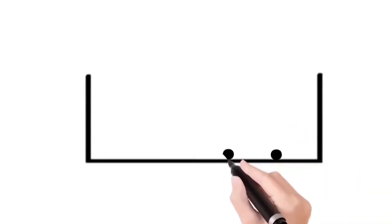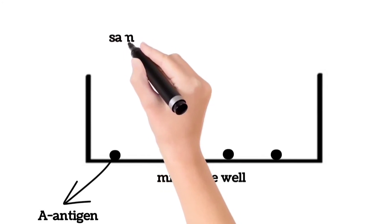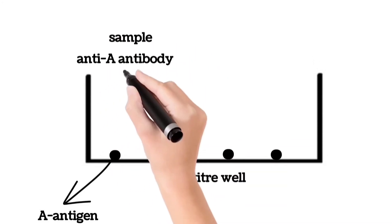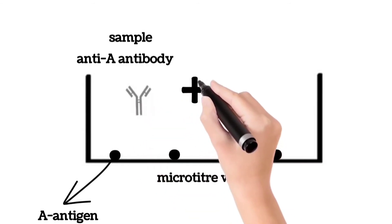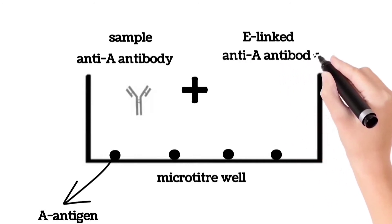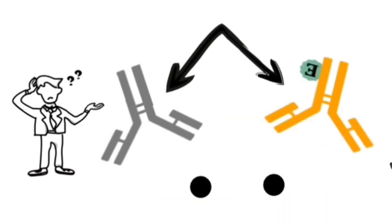In the first step, a microtiter well is coated with the A antigen, and this coating is mediated with the help of a coating buffer. After this, the sample containing anti-A antibody — whose concentration is to be determined — and a fixed amount of enzyme-linked anti-A antibody are added to the well.